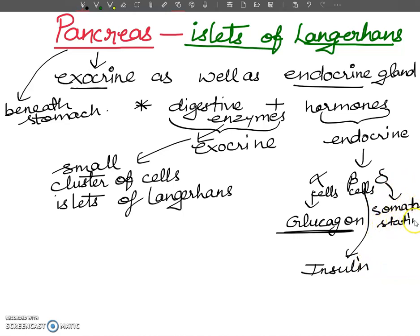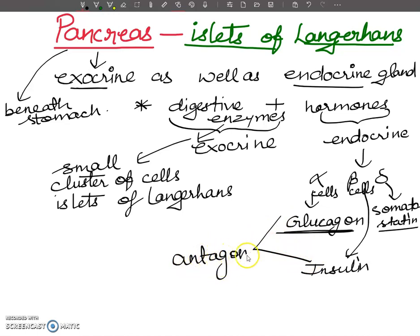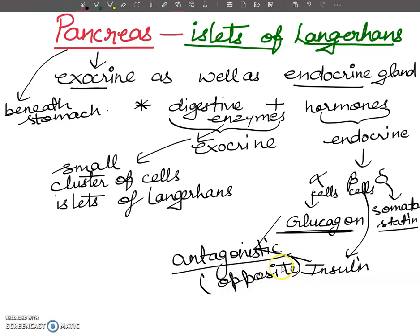These are the hormones secreted by the different cells of the islets of Langerhans. Insulin and glucagon have antagonistic effects, meaning they have opposite effects on each other. They are associated with the metabolism of carbohydrates and fats.